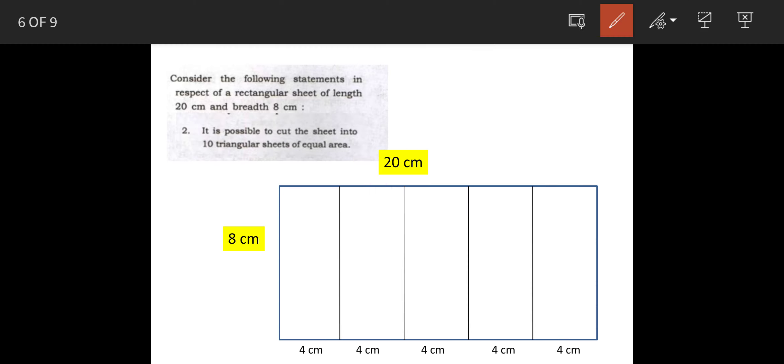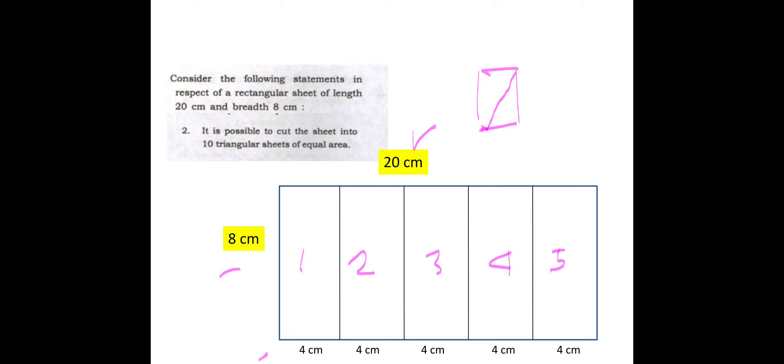The second one is: is it possible to cut the sheet into 10 triangular sheets of equal area. When you have a rectangle and you draw a diagonal like this, you will get 2 triangles of equal size. So, this is 20 cm. So, if we have 5 rectangles of size 8 cm by 4 cm - 1, 2, 3, 4, 5 - then it is possible to have 10 triangles.